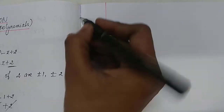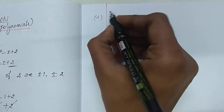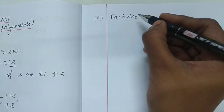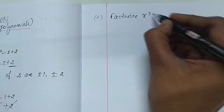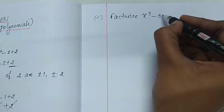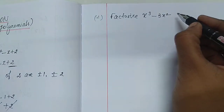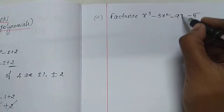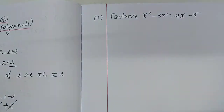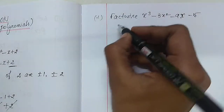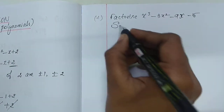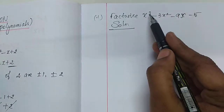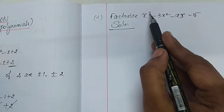Now move to Division number 2. Factorize x cube minus 3x square minus 9x minus 5. Here also, degree is 3.